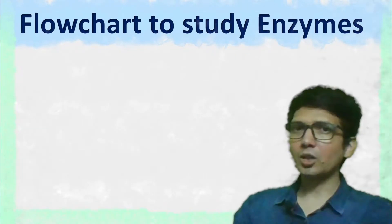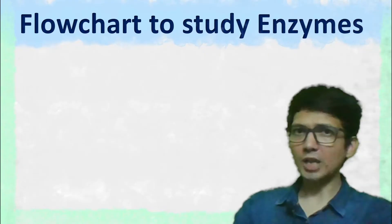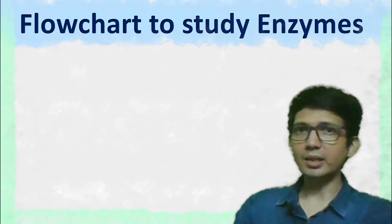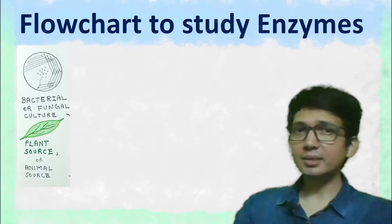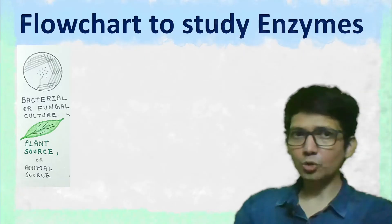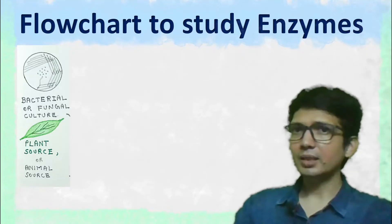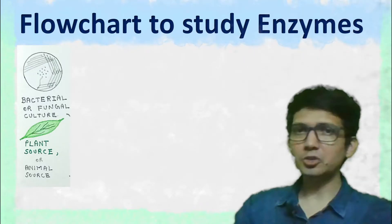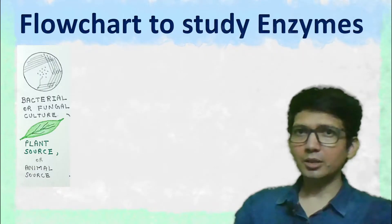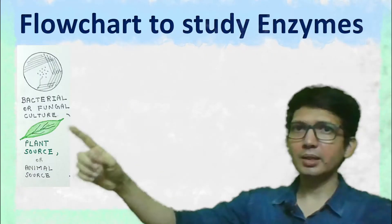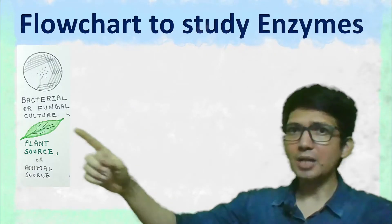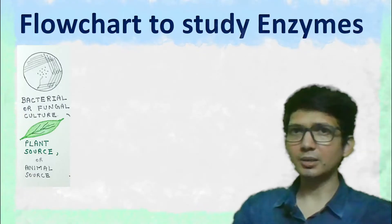Hi, let's talk about the flowchart to study enzymes. The first step to study an enzyme is the selection of the source from which the enzyme of interest is to be isolated. The source can be microbial, plant, or animal.